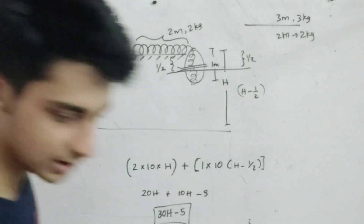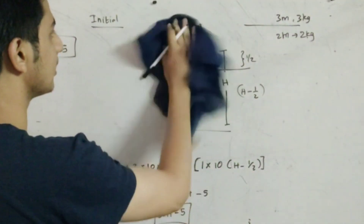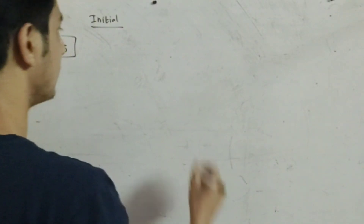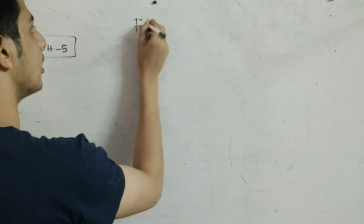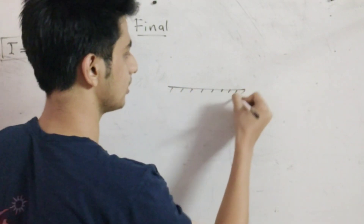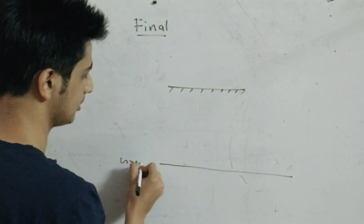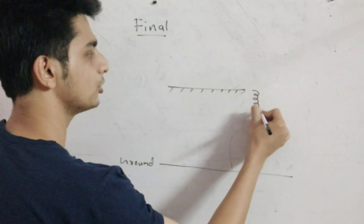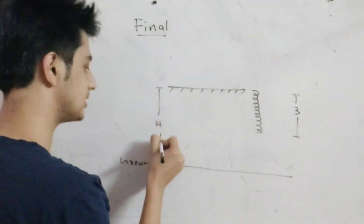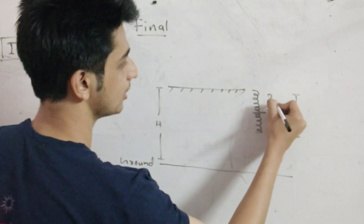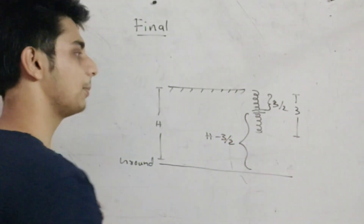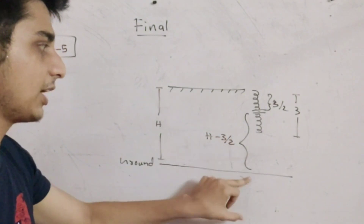Now let's get the final answer. We go to the final stage. In the final condition, the cable — the full chain — hangs off the table. The length is 3 meters. This cable height is h. The center of mass of the full chain is 3/2 from the top, so the center of mass is at h minus 3/2 from the ground.